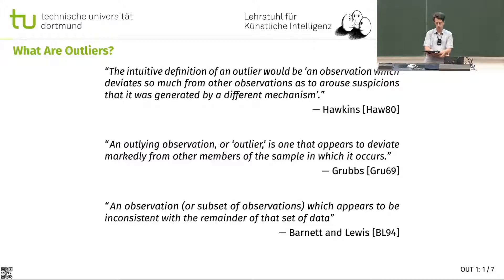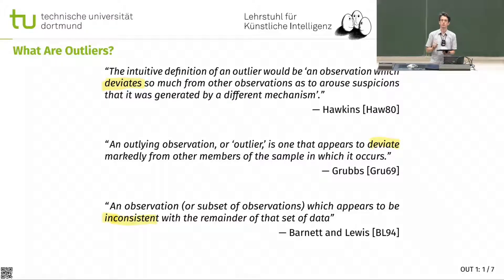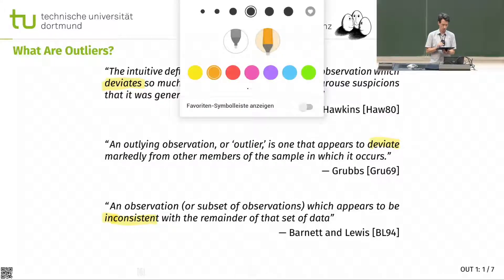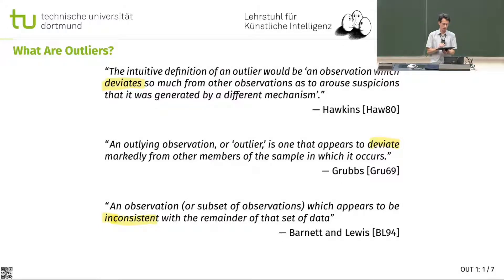From a textbook by Barnett and Lewis: an observation or subset of observations which appears to be inconsistent with the remainder of the data set. There are interesting recurring themes in these definitions — deviation and inconsistency. They somehow don't fit; they deviate from the remainder of the data set. These classic definitions are all based on the idea of deviating from the remainder.